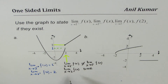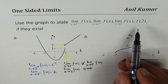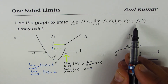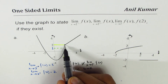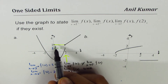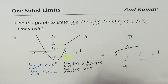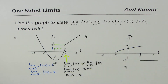One-sided limits also tell you what is the limit of the function at that point. If both are the same, then the limit exists. If not, it does not exist. Now, to find the value of the function at 2, we can see we have a filled-in circle at x equals 2. So f of 2 is equal to 2. That is the value of f of 2.